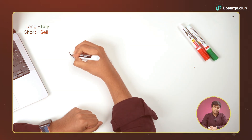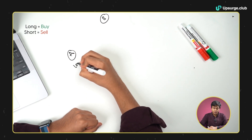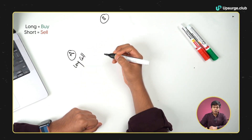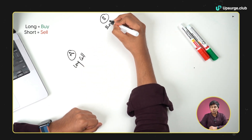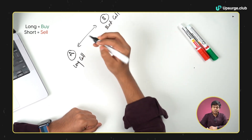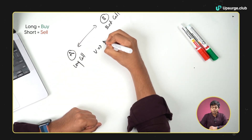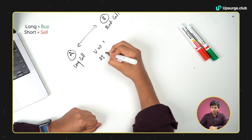Volume is basically how many times a particular contract is getting traded, and open interest is the number of contracts being opened at a given point in time. For example, say there are two parties A and B. A goes long call, and to go long call there has to be a person who goes short call. They make a trade. Right now there is one contract that is opened and one trade that has happened, so in this case the volume is 1 and the open interest is also 1.